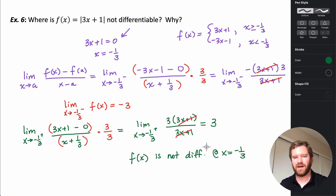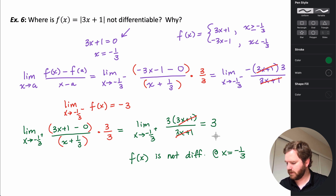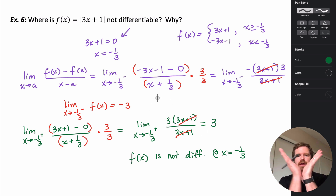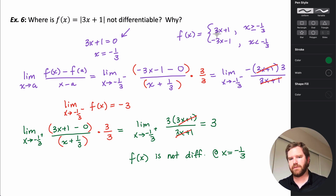The function is not differentiable there because of the sharp corner — more explicitly, because the limit from the left and the limit from the right are not equal. This makes sense since an absolute value is just two lines: the line coming in from the left has slope -3, and the line from the right has slope +3, reflected in our piecewise function.